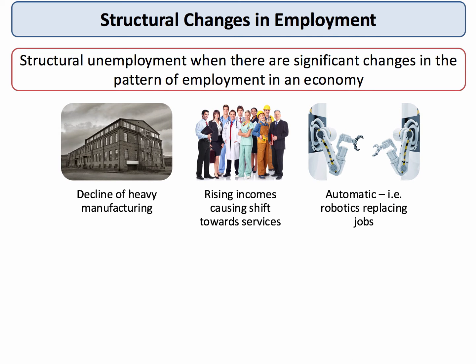So what causes structural unemployment? The pattern of jobs in our labour market necessarily changes over time. In the UK we've seen the long-run decline of heavy manufacturing such as shipbuilding, coal, and steel — a process known as de-industrialisation — where many full-time jobs used to be had. Linked to this has been a shift towards the service economy, partly because the income elasticity of demand for services is higher than for manufactured goods generally, leading to a shift in employment away from traditional manufacturing.